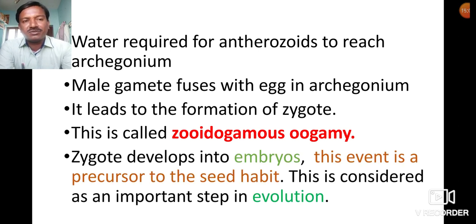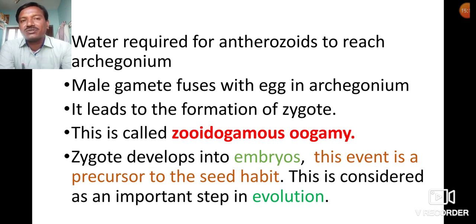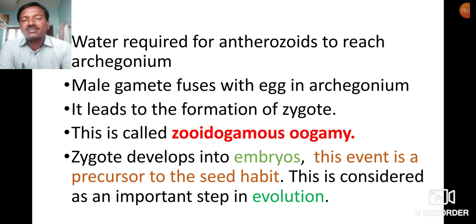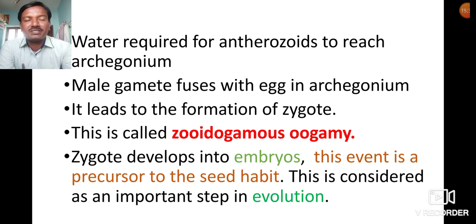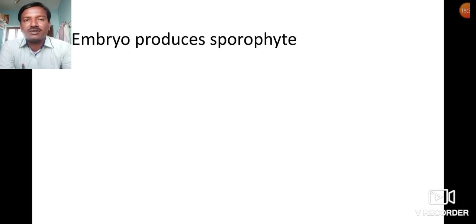The zygote develops into an embryo after some changes. This formation of embryos is a precursor to the seed habit, and so this is considered an important step in evolution.